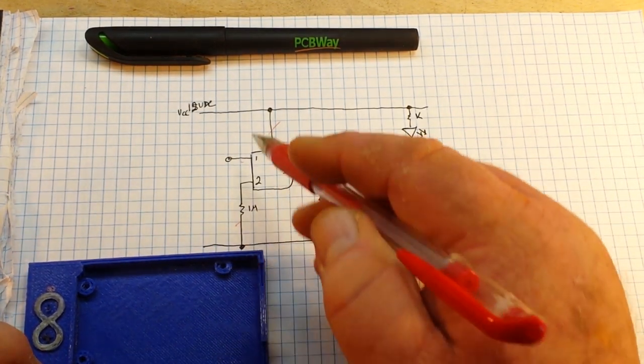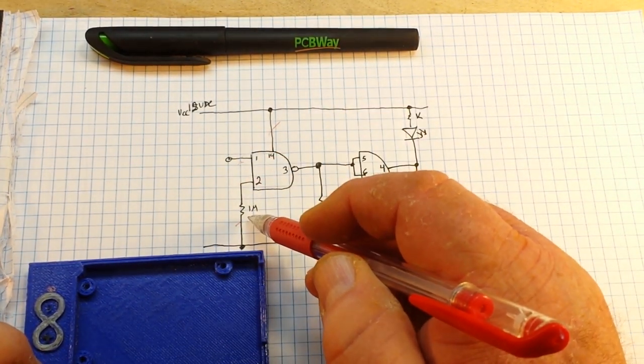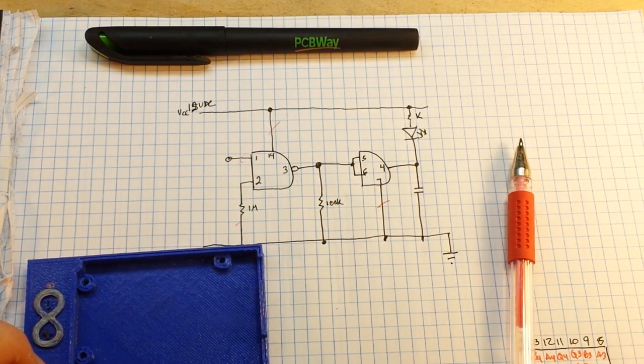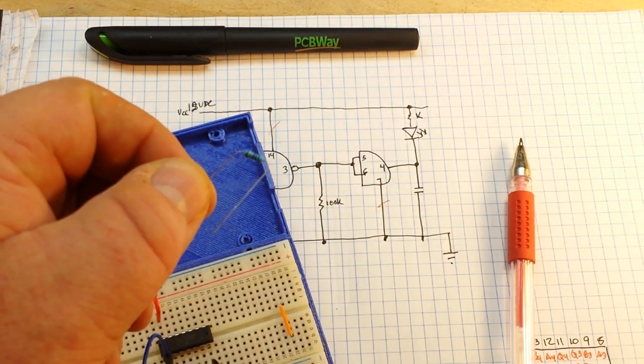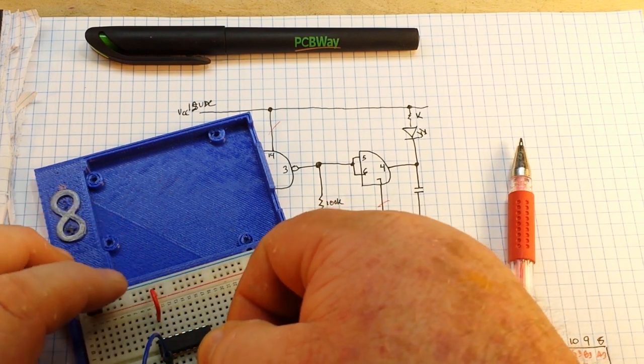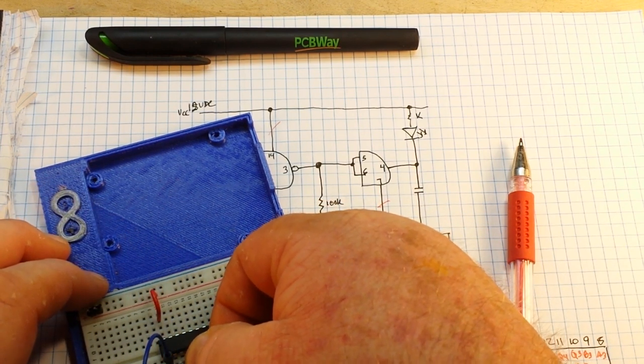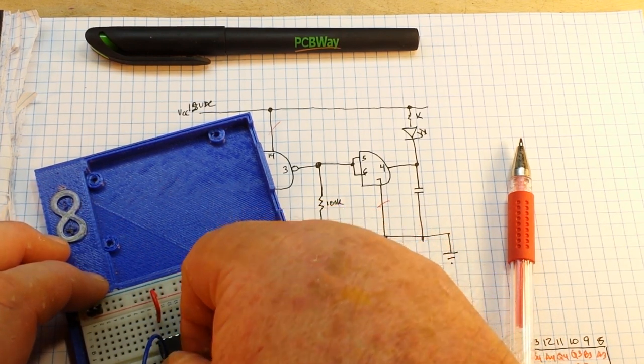Pin 2, whoops, pin 1, pin 2 has a 1 meg resistor and goes to ground. So we get a 1 meg resistor from pin 2, from pin 2 to ground.